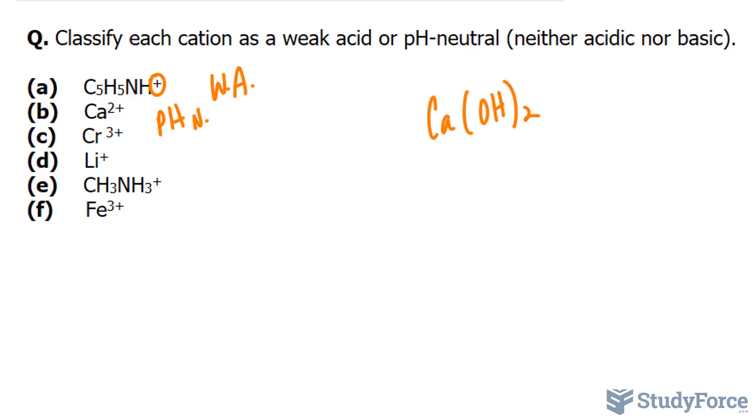In question C, Cr3+, that's a chromium ion. Now anytime you have a small, highly charged metal cation, such as this one or aluminum 3+, or iron 3+, they actually form weak acids in solution. So if it's coupled with, let's say, water in a solution, it will begin to donate the protons of water forming hydronium ions.